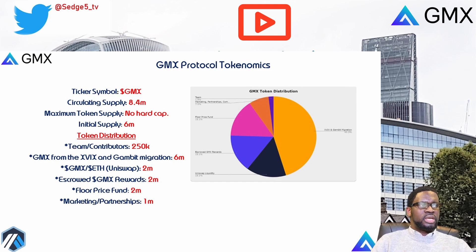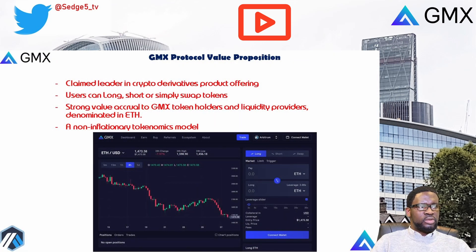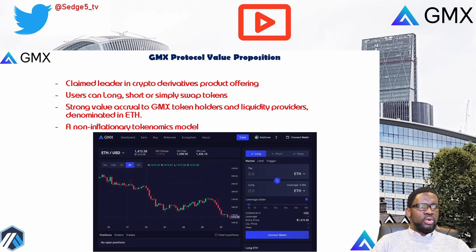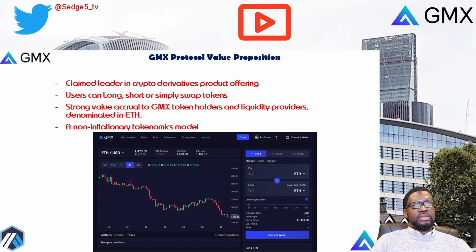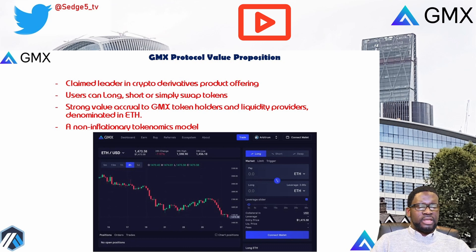Now for the GMX protocol value proposition. The team claims that GMX is a leader in the crypto derivatives product offering space. Users can long, short, or simply swap tokens. There is strong value accrual to GMX token holders and liquidity providers denominated in Ethereum, and a non-inflationary tokenomics model. GMX's GLP doesn't require inflationary farm-and-dump style token incentives - it rewards in Ethereum instead, which is commendable. The sheer size of the derivatives market is orders of magnitude greater than spot. In 2021, there were roughly $50 trillion worth of perpetual swaps traded in traditional finance, almost a 6x increase from the previous year.